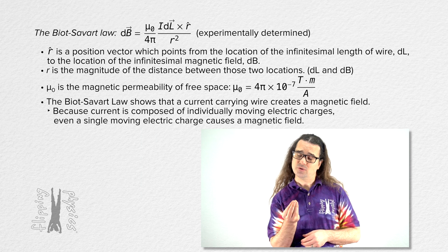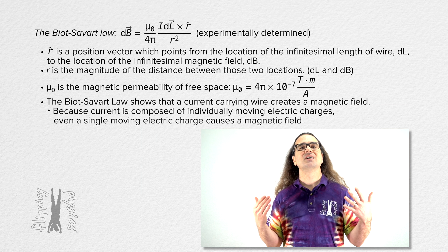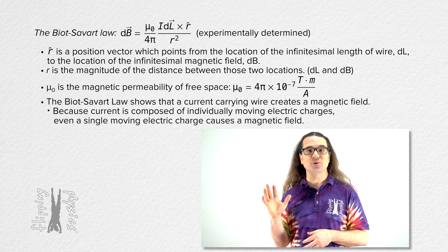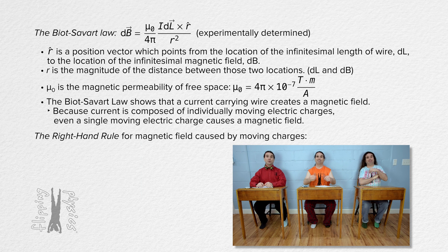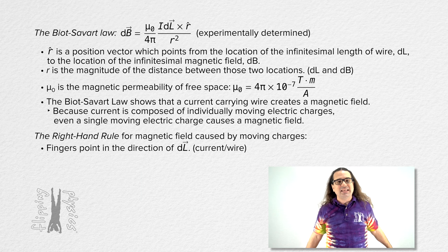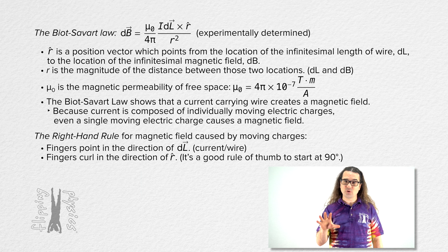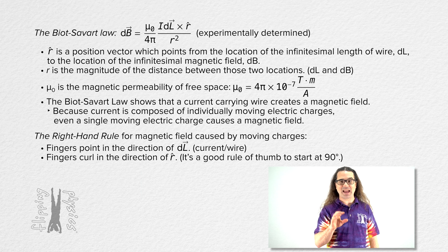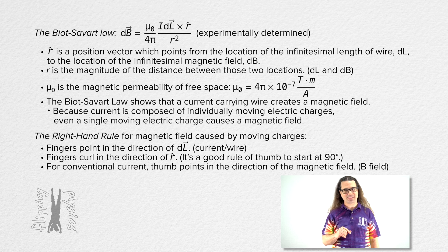Clearly, the Biot-Savart Law, which uses the cross product, gives the direction of the magnetic field. What handy tool do we use to determine the direction of the cross product? The right-hand rule. Of course — limber up and find your right hand. Fingers point in the direction of the current or of the wire. Fingers curl in the direction of unit vector r-hat — it is a good rule of thumb to start curling at 90 degrees. For conventional current, the thumb points in the direction of the magnetic field.